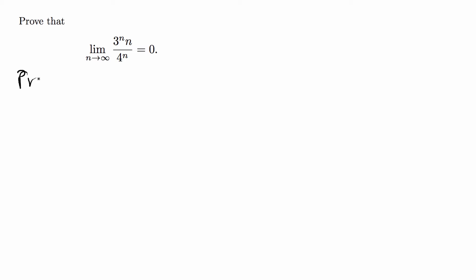Hey guys, in this video we're going to do a proof from real analysis but the problem also applies to calc 2 courses. It says to prove that the limit as n goes to infinity of 3 to the n times n over 4 to the n is equal to 0.